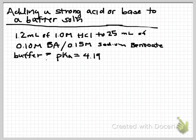In the example I'm showing, I have 1.2 milliliters of 1.0 M hydrochloric acid that I'm going to add to 25 milliliters of my buffer solution, which is 0.10 M benzoic acid and 0.15 M sodium benzoate solution. The pKa of my buffer is 4.19. In a previous video we calculated the pH of this buffer to be 4.37. It is expected that when we add hydrochloric acid to my buffer solution, although it's a strong acid, the pH is going to be fairly close to the existing pH of 4.37.